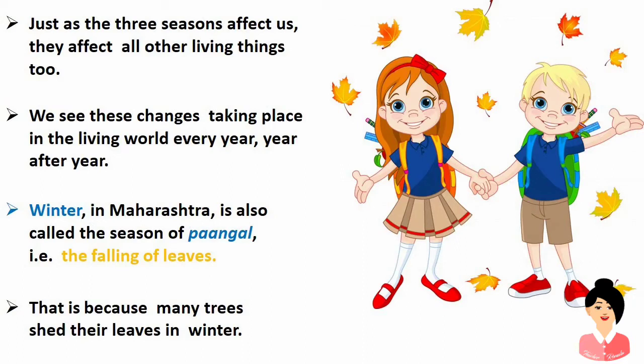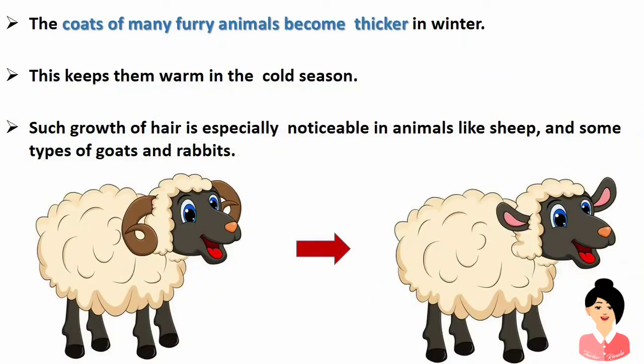Winter in Maharashtra is also called the season of pangal, that is, the falling of leaves, because many trees shed their leaves in winter. The coats of many furry animals become thicker in winter, which keeps them warm. Such growth of hair is especially noticeable in animals like sheep, some types of goats, and rabbits.